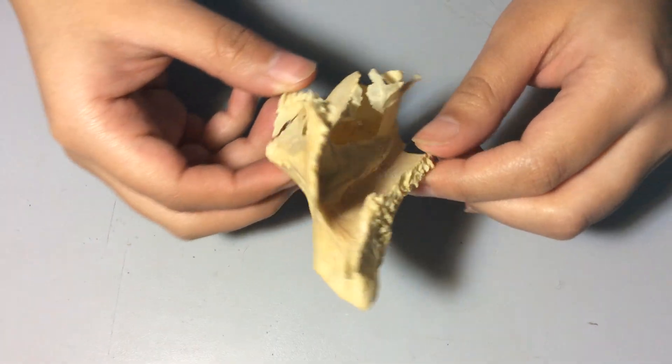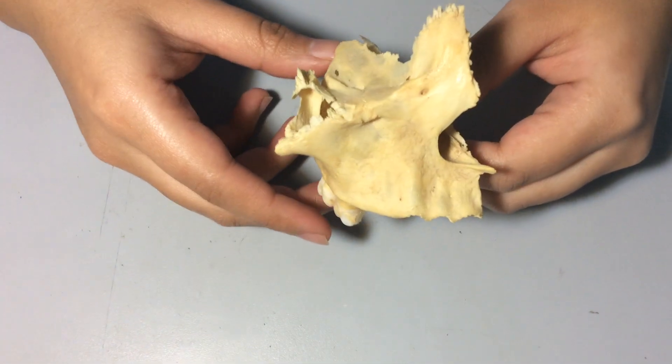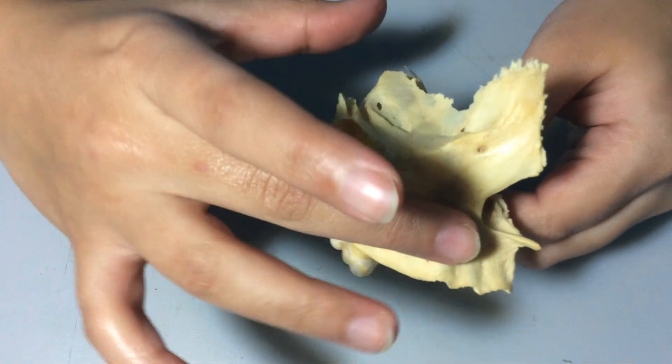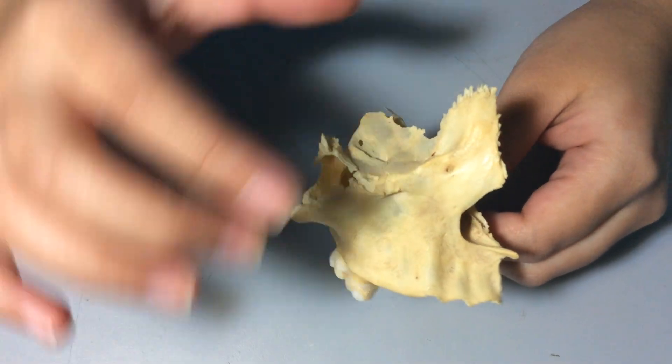This is maxilla. It is a paired and pneumatic bone. It has a body and four processes.